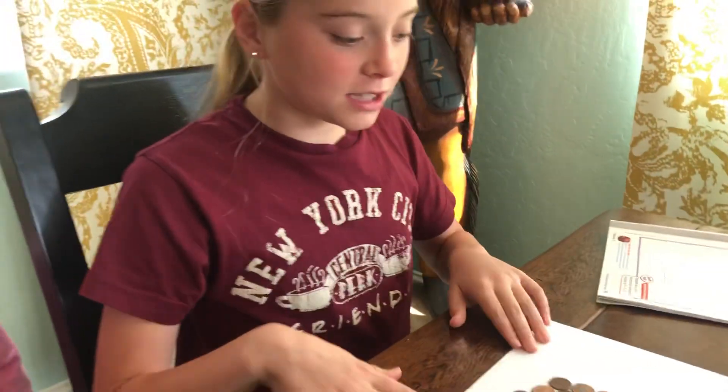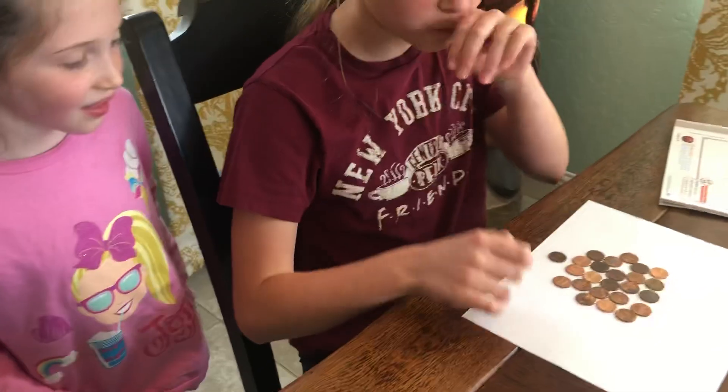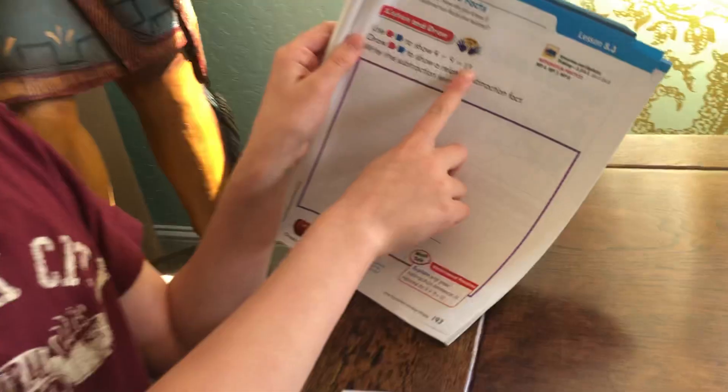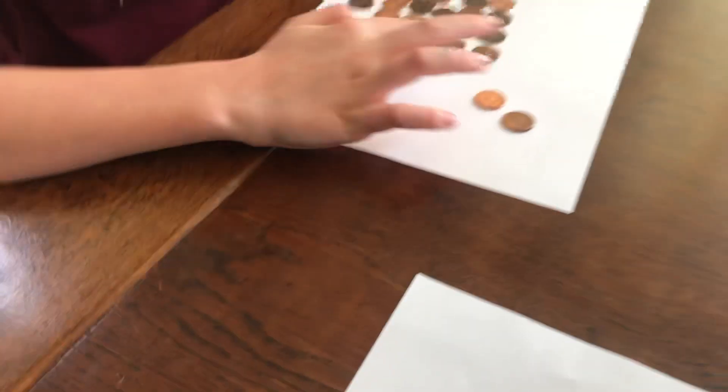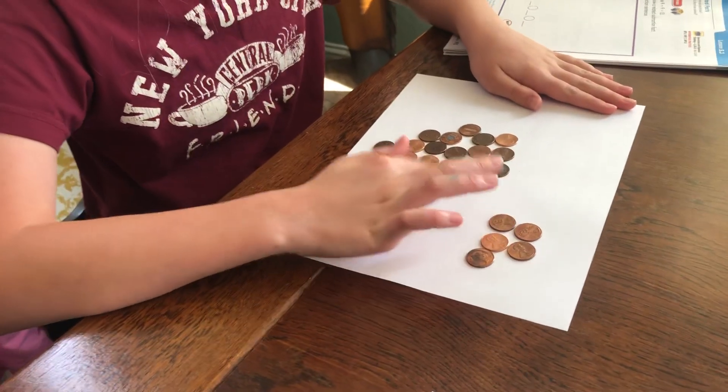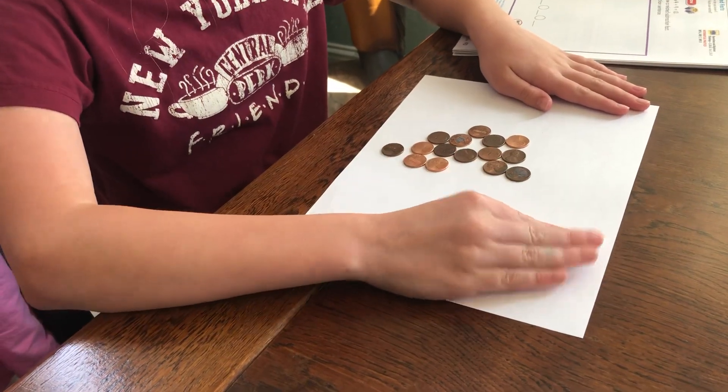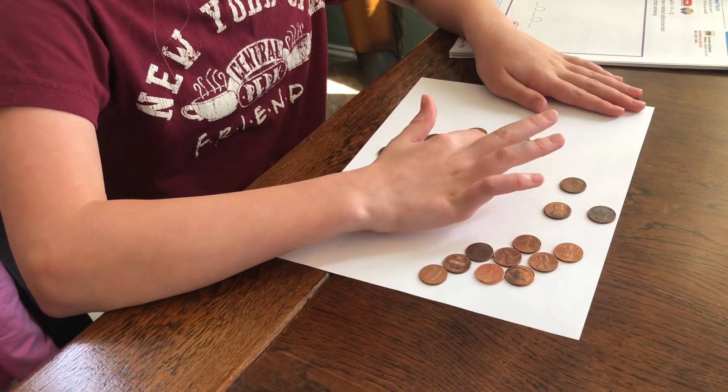Well, I know here we have all these pennies, so we're going to count out 13 because it says you're equal to 13. So 1, 2, 3, 4, 5, 6, 7, 8, 9, and then 1, 2, 3, 4.